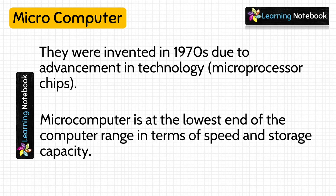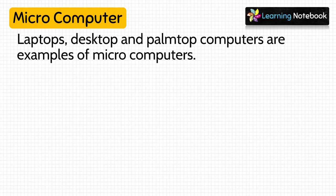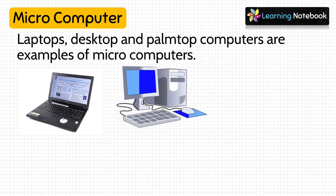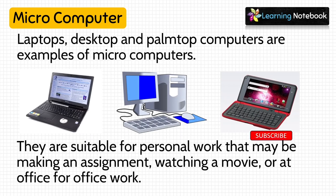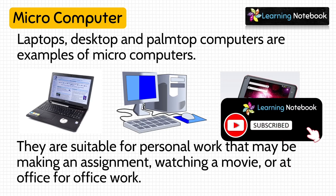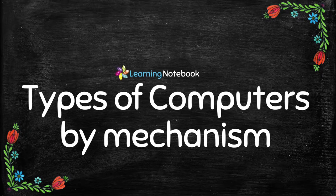Out of all the size-based types, microcomputers are the slowest and have the least storage capacity. They are also low-cost computers. Some examples are laptops, desktops, and palmtop computers. Microcomputers are suitable for personal work — that may be making an assignment, watching a movie, or at office for office work. So we have just learned types of computers on the basis of size.